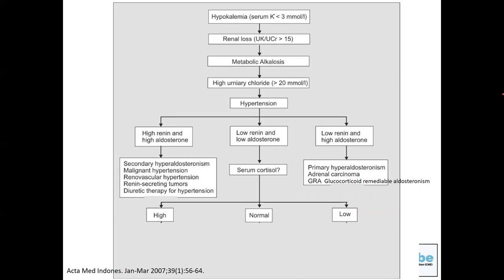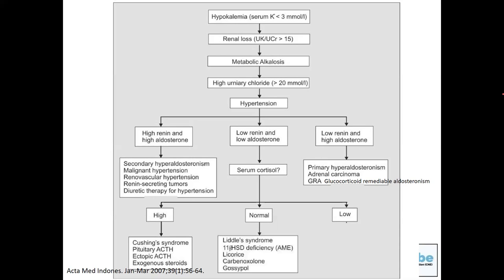If renin is low and aldosterone is also low, measure serum cortisol. If cortisol is high, it may cause hypokalemia through its mineralocorticoid effect, as in Cushing's syndrome or exogenous steroid use. If cortisol is normal, consider Liddle syndrome. If cortisol is low, consider enzyme deficiencies such as 17-alpha hydroxylase or 11-beta hydroxylase deficiency. Licorice intake and carbenoxolone may also fall in this category.